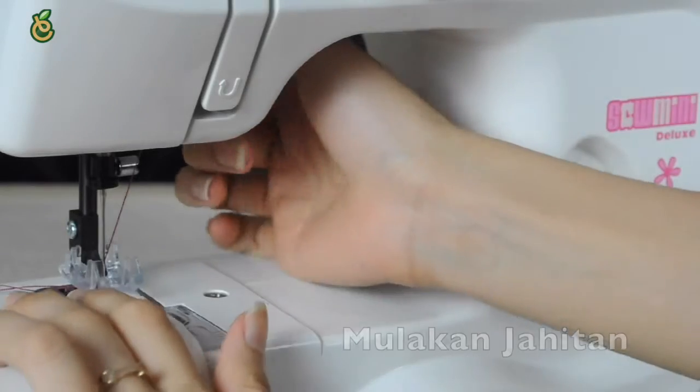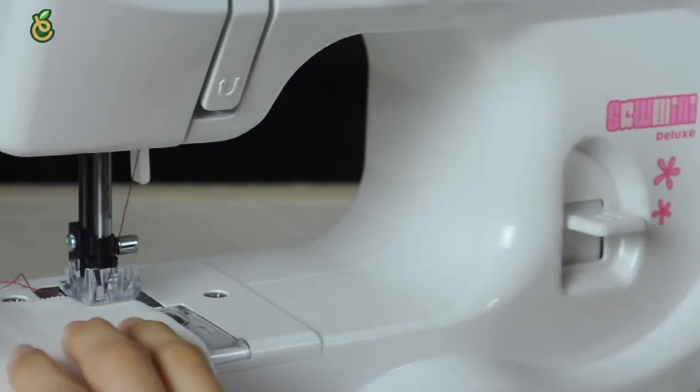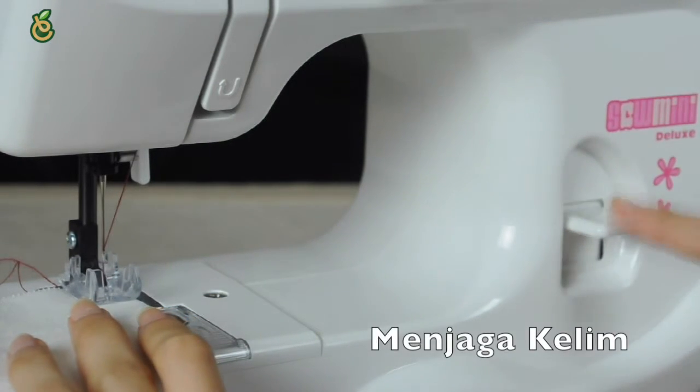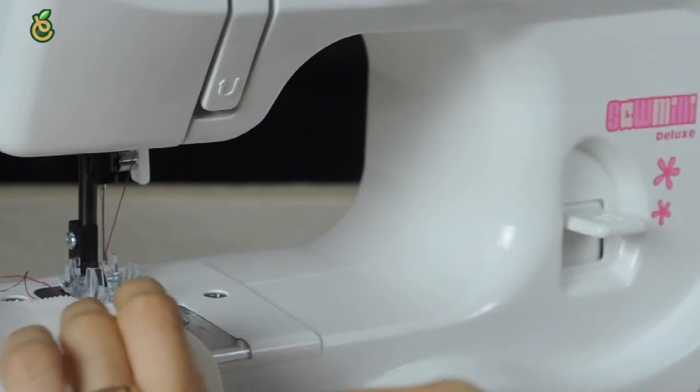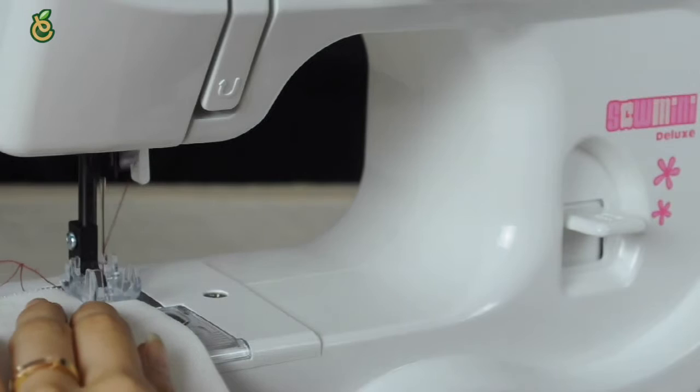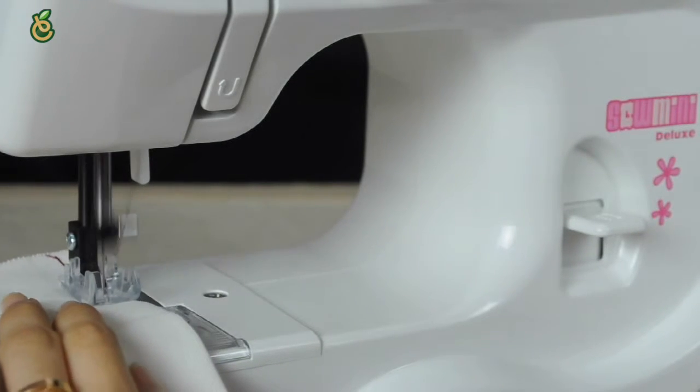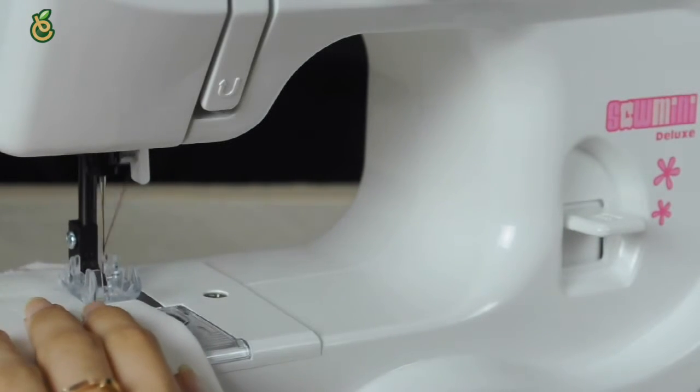Starting to sew: First, raise the presser foot and position the fabric on the needle plate. Next, lower the needle to the point where you want to start. Again, lower the presser foot and pull the thread towards the back. Press the foot switch and gently guide the fabric, letting the fabric feed naturally.